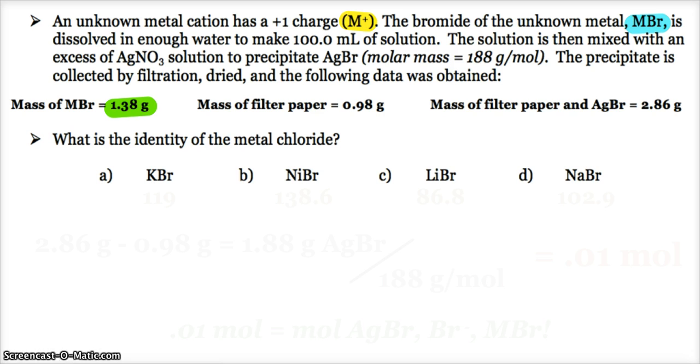And then the very first thing you do is you go ahead and subtract the measurements there so you can find out exactly how much of your precipitate you made. So my 2.86, which is filter paper and precipitate, minus my filter paper. So that is 1.88 grams of my silver bromide.